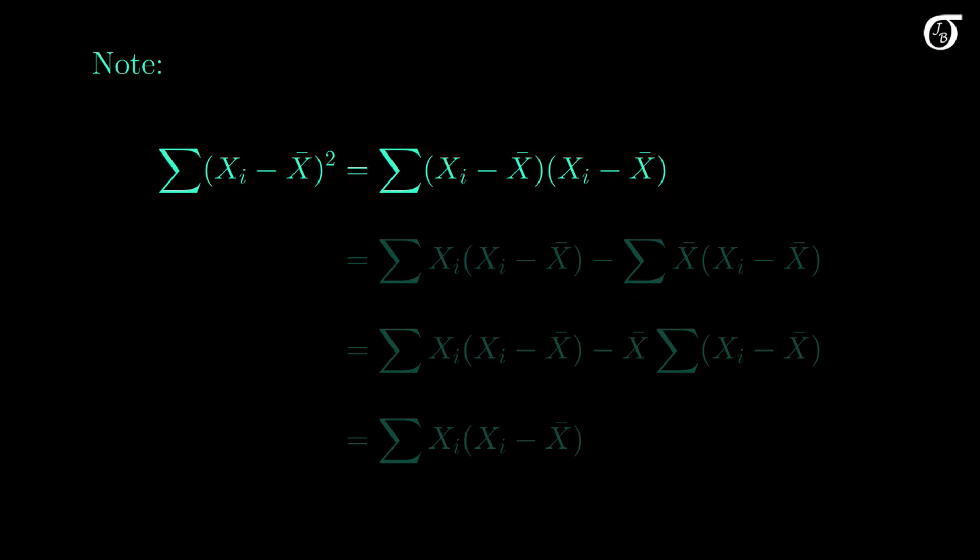Similarly, the sum of squares of x can be written like this. If we split it up as before, and once again realize that, with respect to the summation, x bar is constant and can be taken out front, we get this. And once again the sum of the deviations is 0, so this second term drops out.